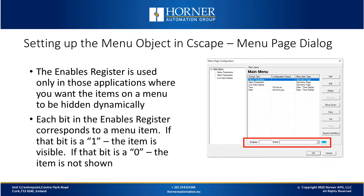Now let's look at other options available in the dialog box. The first is the enables register — an optional advanced feature that allows you to remove or hide items on the list. You assign a 32-bit variable with one bit allocated to each item on your menu or sub-menu, so you can have up to 32 items per menu or sub-menu. If a bit is 1, the corresponding item is visible; if the bit is 0, it's not visible. One example use case: if a user doesn't have authorization, you can hide certain options from them. Remember, this is an optional feature.